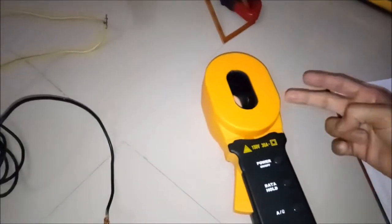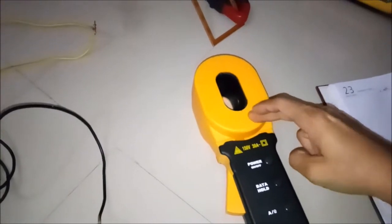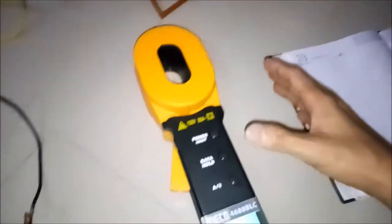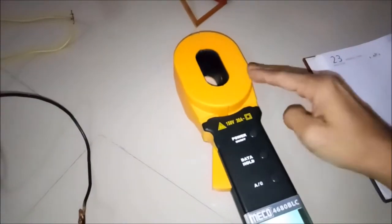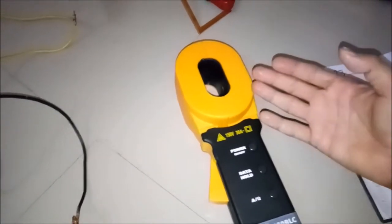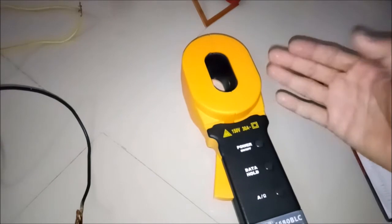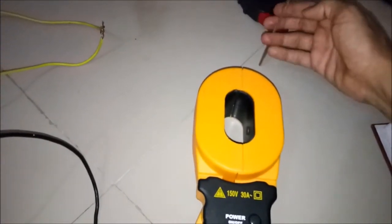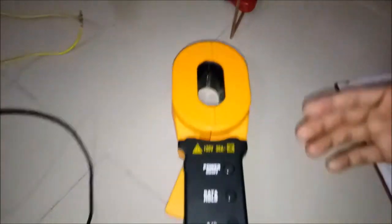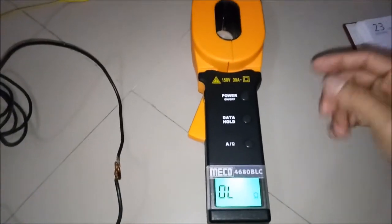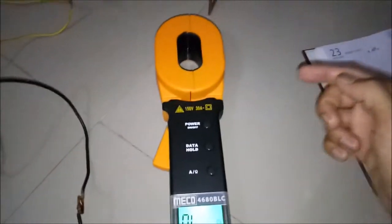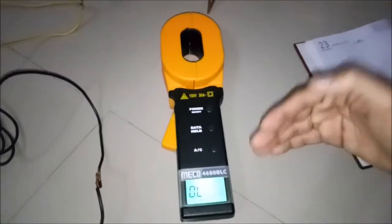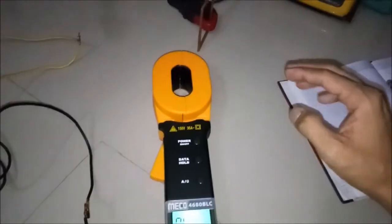So basically what it works on is a principle of Ohm's law. In the first scenario, it develops a voltage that injects the current in any loop where we intend to measure the resistance, and then it calculates the R.